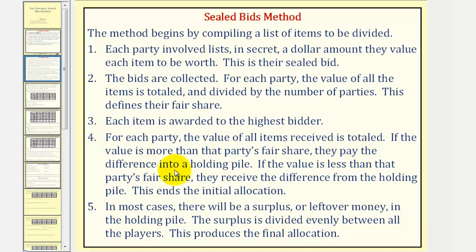If the value is less than that party's fair share, they receive the difference from the holding pile in cash. This ends the initial allocation.